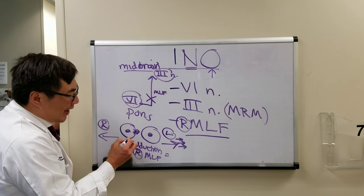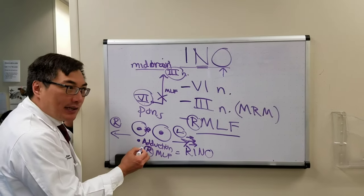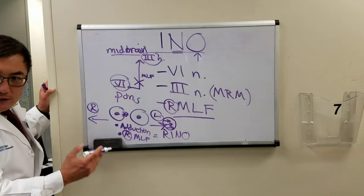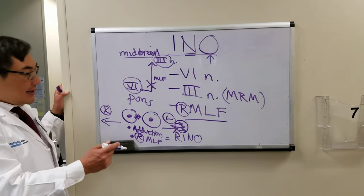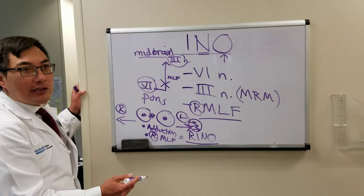So clinically, a right INO has an adduction deficit - it can be partial or complete - associated with a dissociated horizontal abducting eye nystagmus on contralateral gaze. This constellation of findings we call the internuclear ophthalmoplegia.